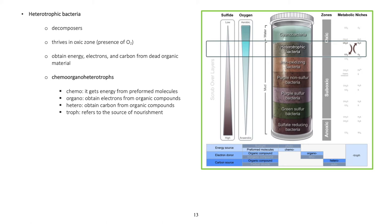Heterotrophic bacteria, decomposers. Thrive in anoxic zone with presence of oxygen. Obtain energy, electrons, and carbon from dead organic material. Chemoorganoheterotrophs - chemo: gets energy from preformed molecules, organo: obtain electrons from organic compounds, heterotrophs: obtain carbon from organic compounds, troph: refers to the source of nourishment.